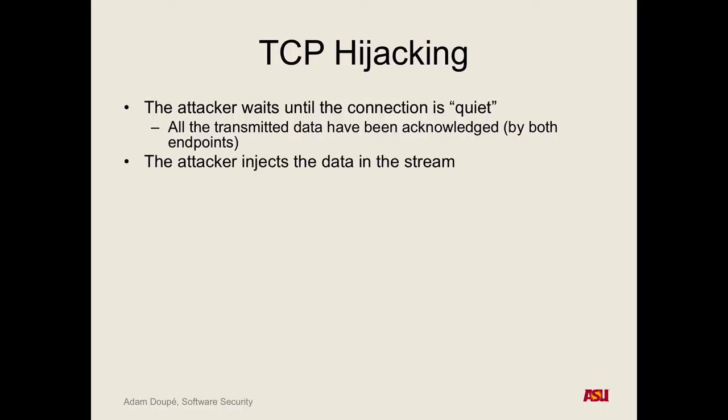Then we inject the data — we send a packet. What do we have to make sure is correct? The sequence number — this tells it what the data is. The acknowledgment number of the other side. Source port, destination port, source IP, and destination IP. We have to make sure all of those are correct so it looks to the receiving computer like this is the next packet in the stream.